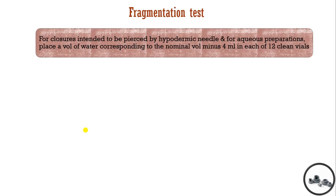For the fragmentation test, we take clean vials for closures intended to be pierced by hypodermic needles, for aqueous preparations. We fill them with water corresponding to the nominal volume minus 4. For example, if the vial nominal volume is 10 ml, we fill 6 ml of water.